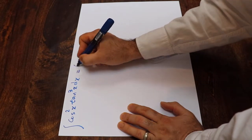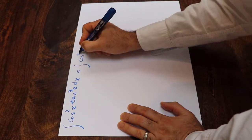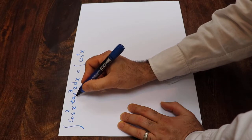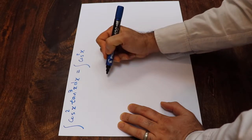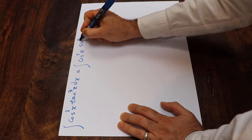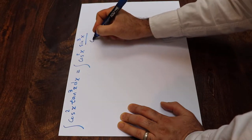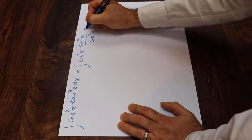You can rewrite this integral as integral of cosine square x. Instead of tangent, I write sine x divided by cosine x. That's the definition of tangent. Therefore, this will be sine 3x divided by cosine 3x dx.